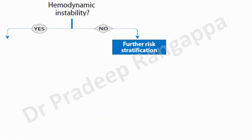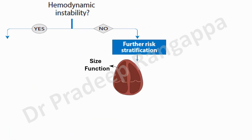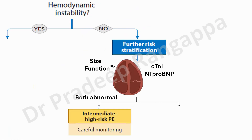If there is no hemodynamic instability, further risk stratification is required. One must assess for right ventricular strain: whether the RV is dilated, whether there is RV dysfunction on echo (TAPSE), and whether cardiac troponin or BNP is elevated. This helps categorize patients as high, moderate, or low risk.